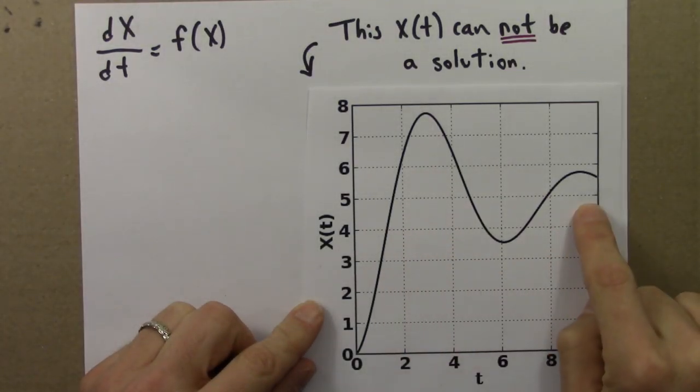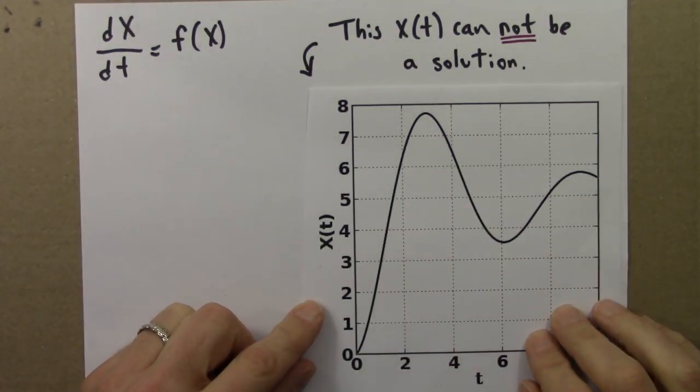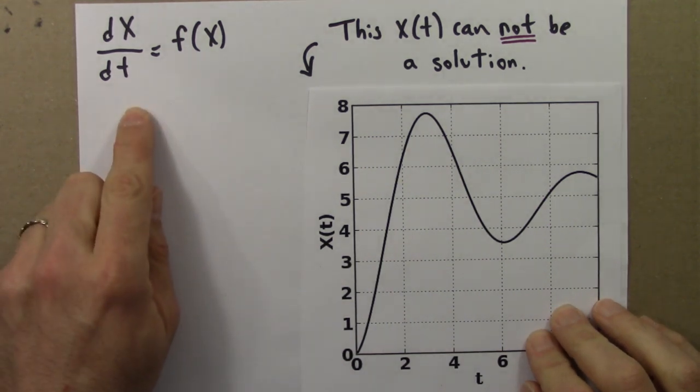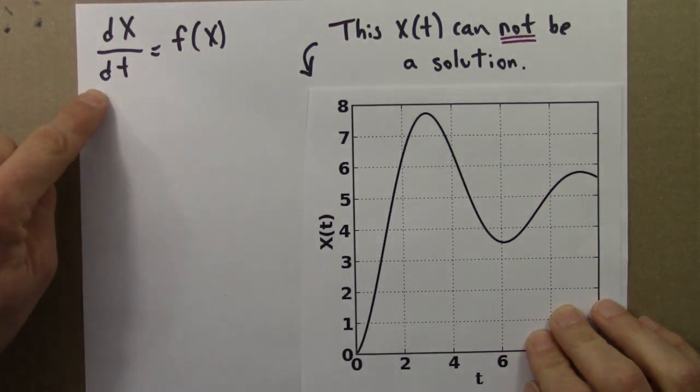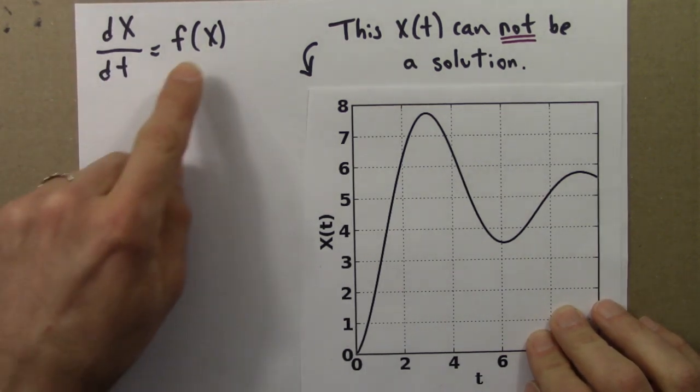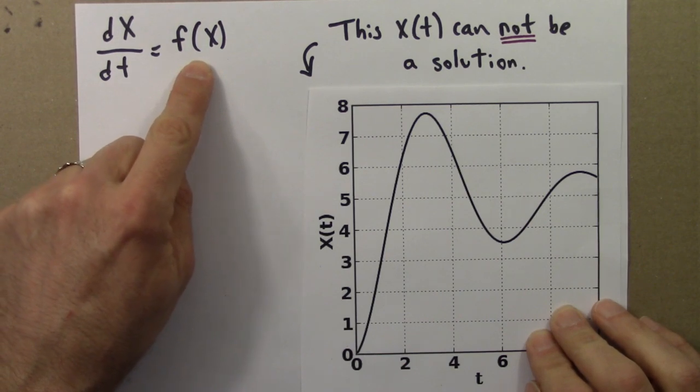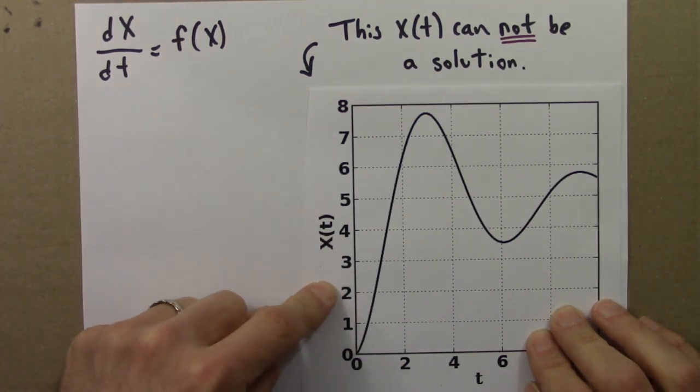The function graphed here cannot possibly be a solution to this type of differential equation. Here's why. This differential equation says that the derivative, the rate of change of x, is only a function of x. And that's not the case for this function.